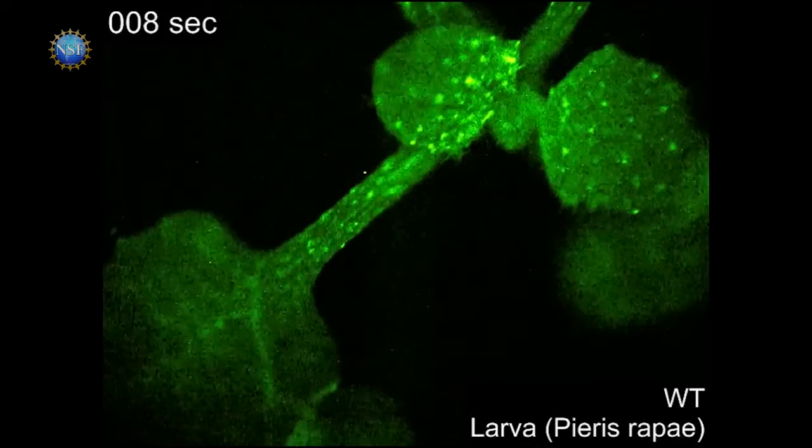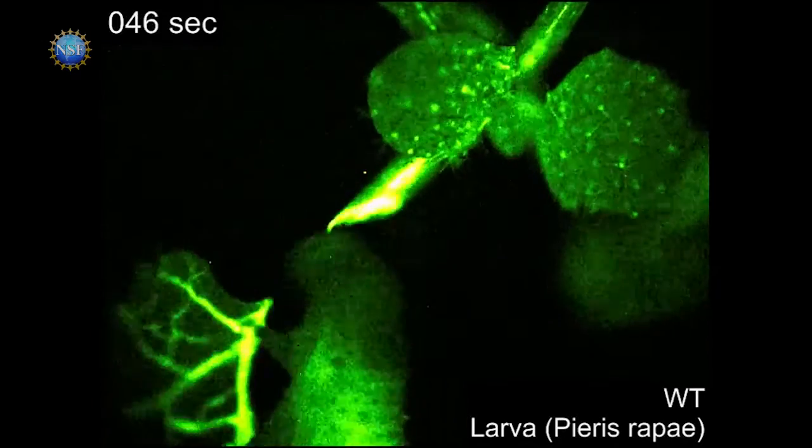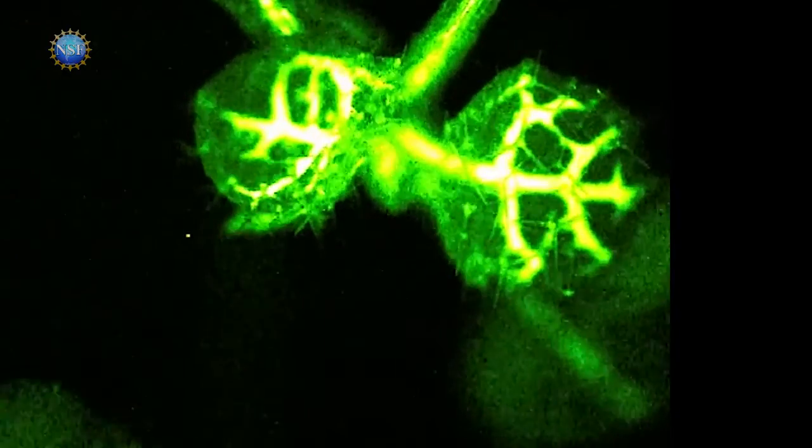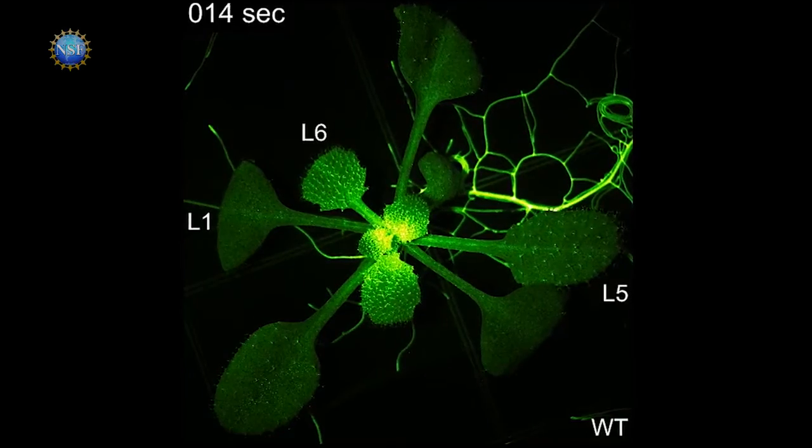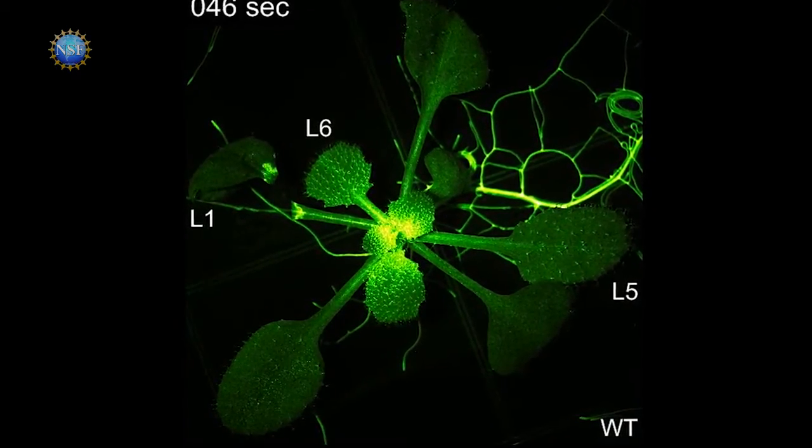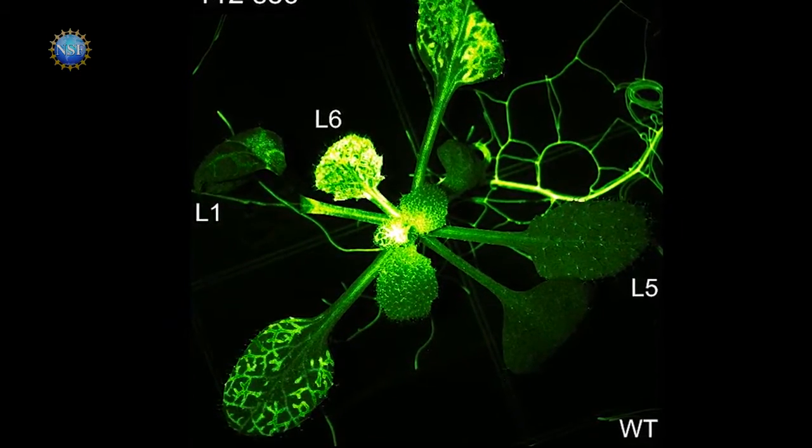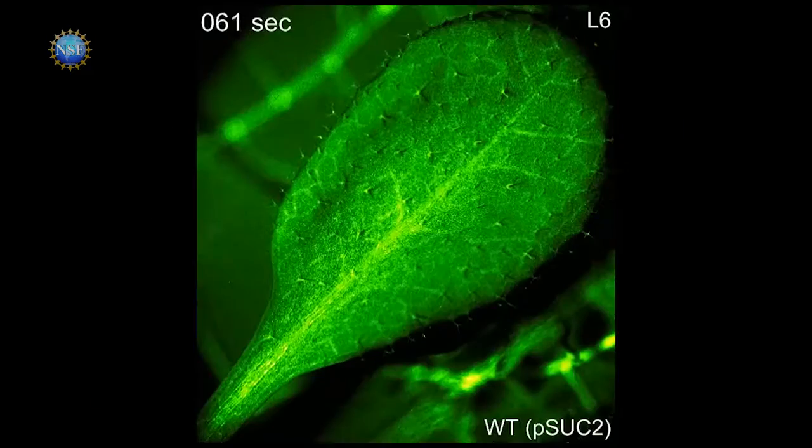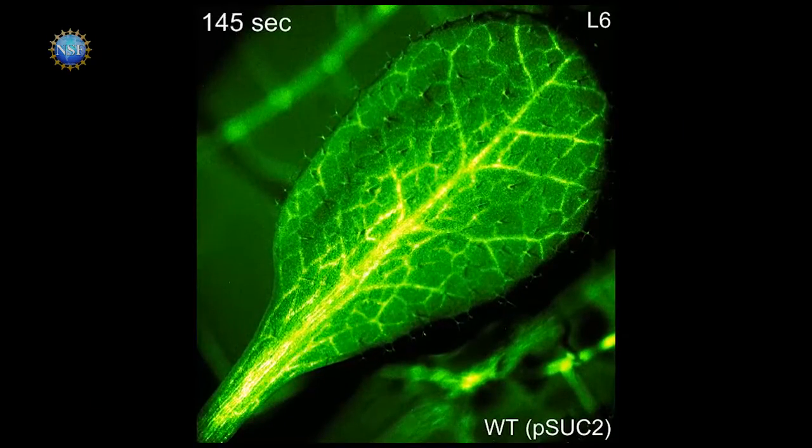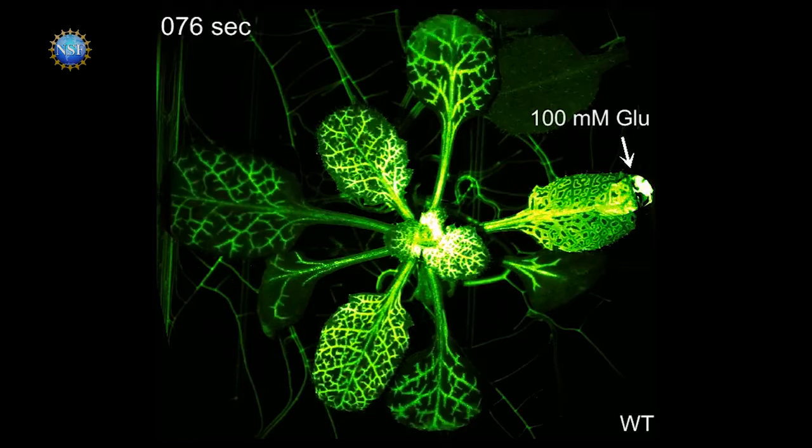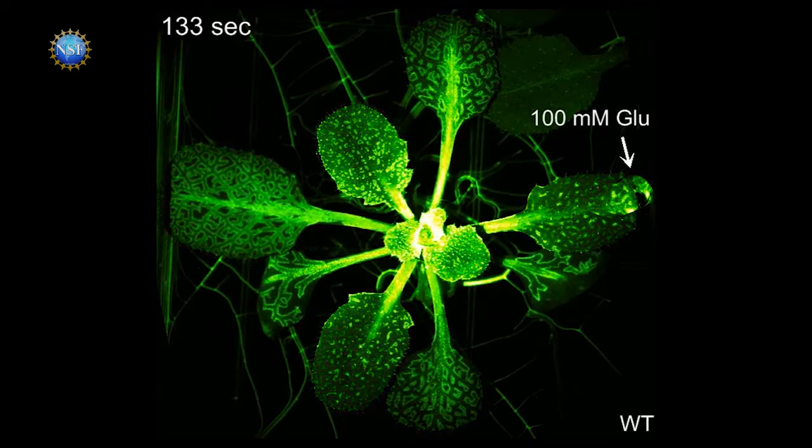Calcium signals. Here's a caterpillar munching through a leaf. See the blaze of fluorescent light washing over the other leaves? That light is tracking calcium as it zips through the plant's tissues, providing an electrical and chemical signal to prepare for attack. The chemical is activated by glutamate exiting the plant's wounds. Within minutes, the leaves produce noxious chemicals to ward off predators.